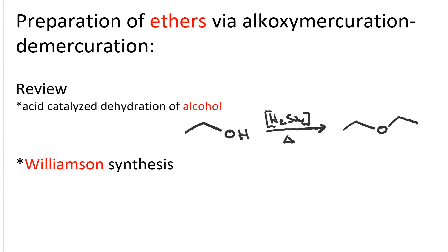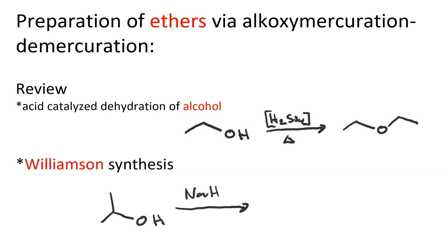If I want an asymmetric ether, I use the Williamson ether synthesis, where I take a more substituted alcohol like isopropanol and react it first with sodium hydride, and second with a less substituted alkyl halide like ethyl bromide. Then I end up with isopropyl ethyl ether, an asymmetric ether.